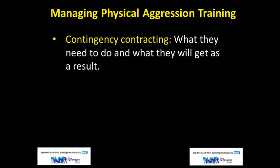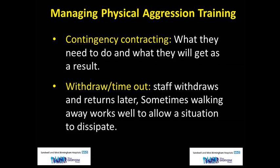Contingency contracting: tell the patient what they need to do and what and when they will get as a result. For example: 'Let's make a deal. You sit still, I'll get your wound cleaned up, then you're going to be able to go. But we've got to work together on this.' In this situation, we are trying to ensure that the individual understands why it is in their interest to comply with us. Withdraw or time out: this is where staff withdraw and return later on — it can help at impasses and enable staff to compose themselves. Sometimes walking away works well to allow a situation to dissipate.